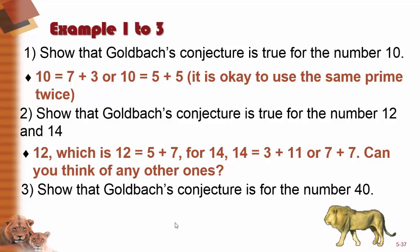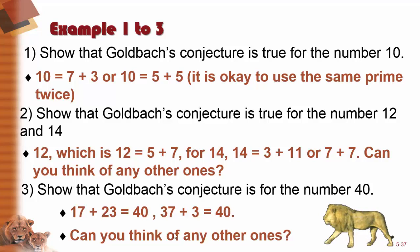In example number 3, we're asked to show that Goldbach's conjecture is true for the number 40. 17 plus 24 is equal to 40. 37 plus 3 is equal to 40. Can you think of any other ones?